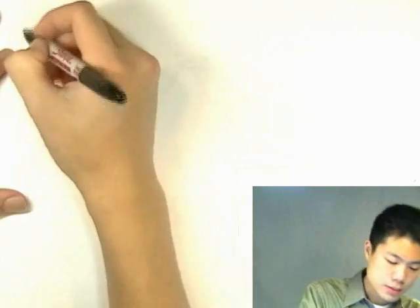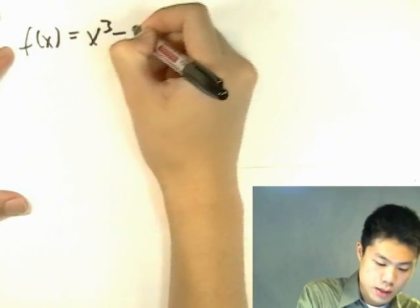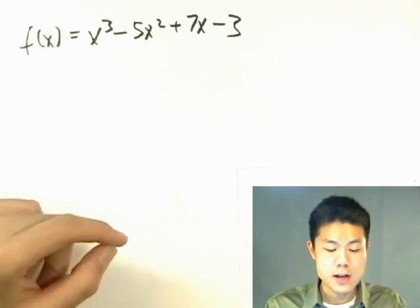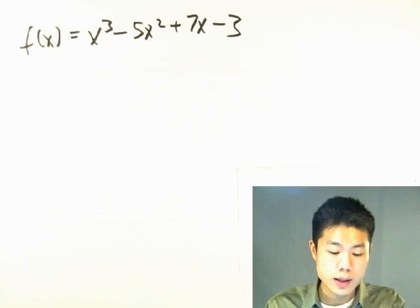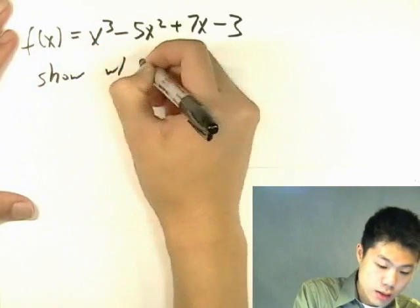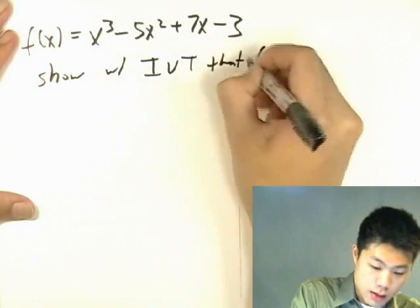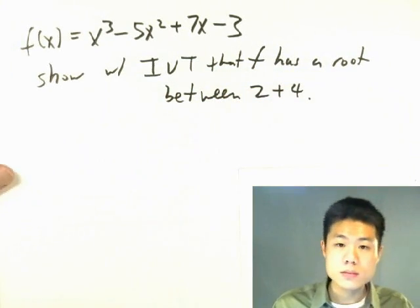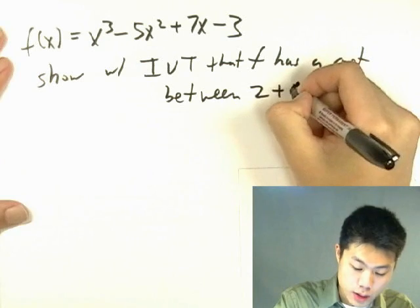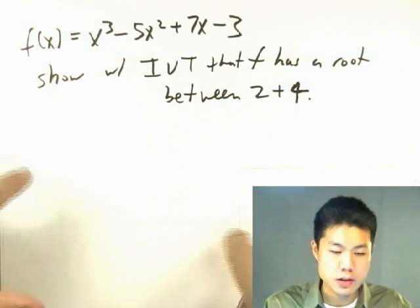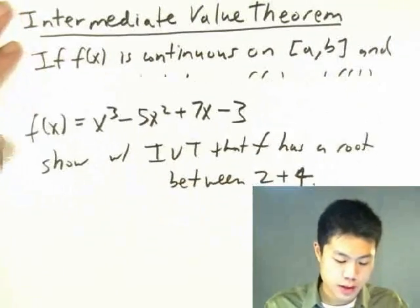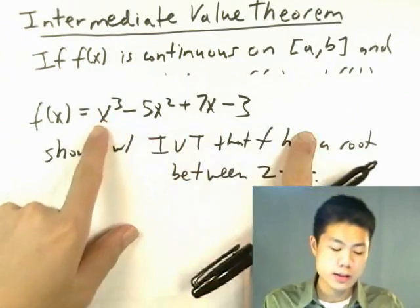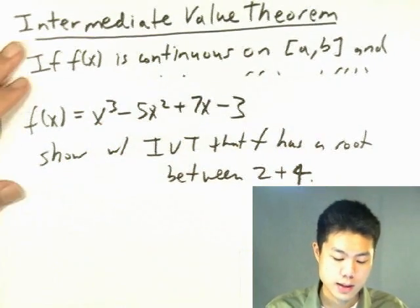Let's look at an example. f(x) = x³ - 5x² + 7x - 3. The question is: show with the Intermediate Value Theorem that f(x) has a root between 2 and 4. First we would have to confirm that the function satisfies the two conditions. The first condition is that f(x) is continuous on [2, 4]. This is a polynomial, so it's continuous everywhere — yes, the graph is continuous between 2 and 4.